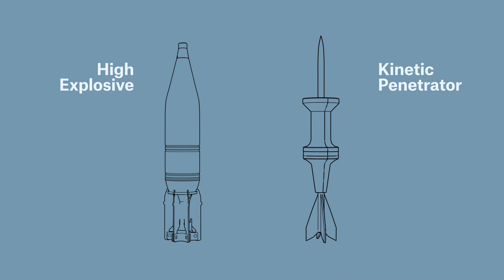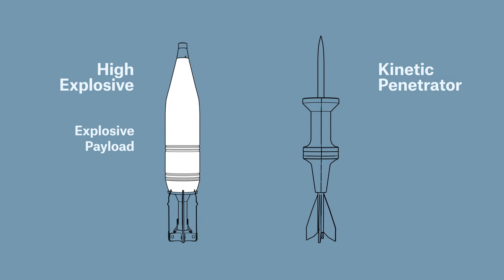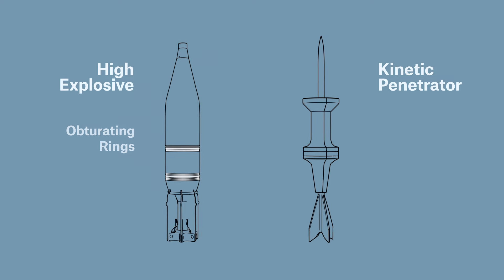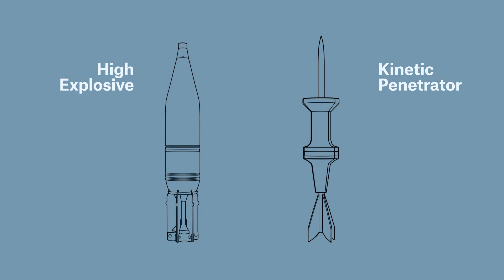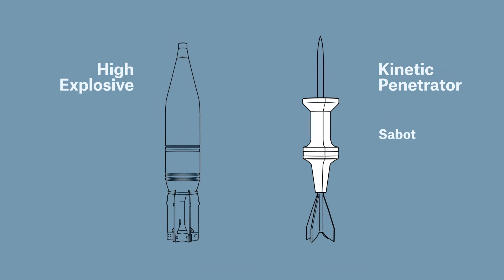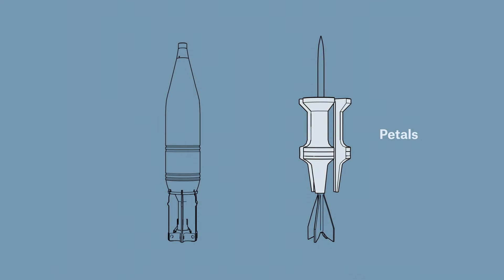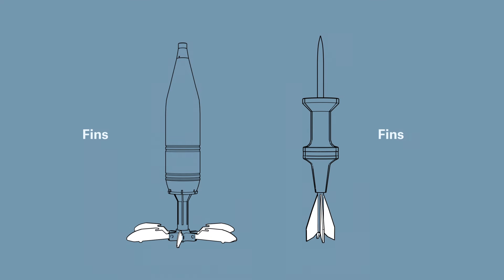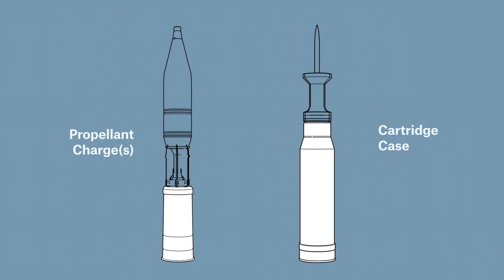The key parts of a high-explosive projectile are the fuse, the steel body containing the explosive payload, and the obturating rings. Kinetic energy penetrators instead include a dart and sabot, sometimes referred to as petals. Both often feature fins, and depending on the projectile, can be loaded with either separate loading charges or a cartridge case.